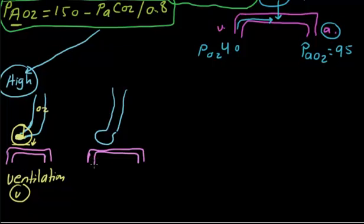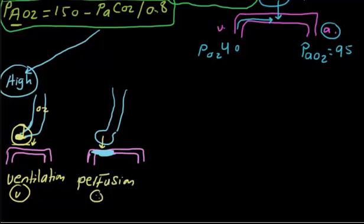In the second example, the alveoli are okay so oxygen can move to the pulmonary capillary. But the problem is in the pulmonary capillary itself — it is obstructed, for example by a pulmonary embolism. We call this a perfusion problem. These are the two common causes of high A-a gradient.